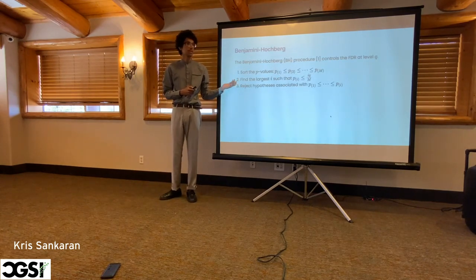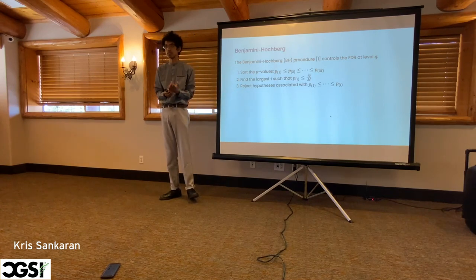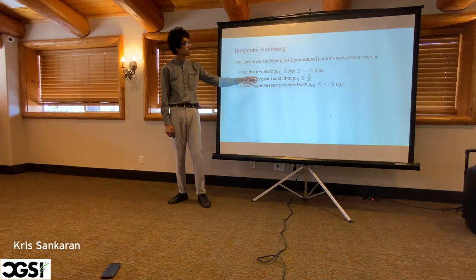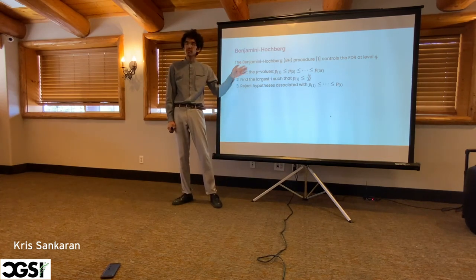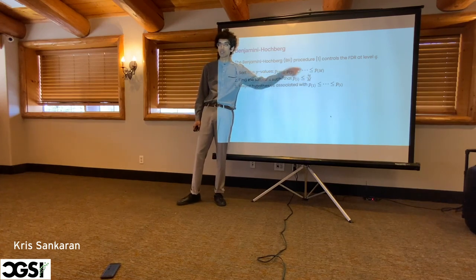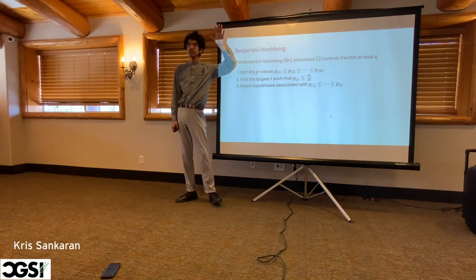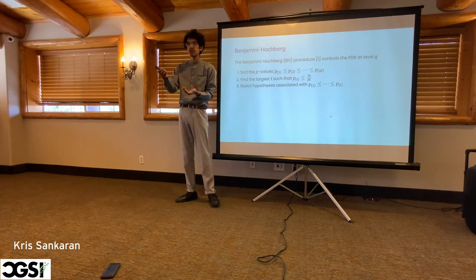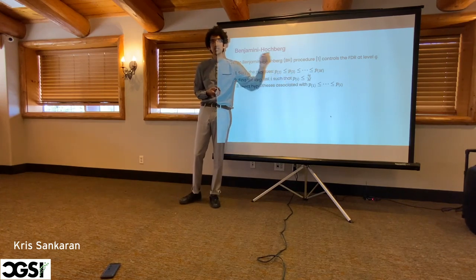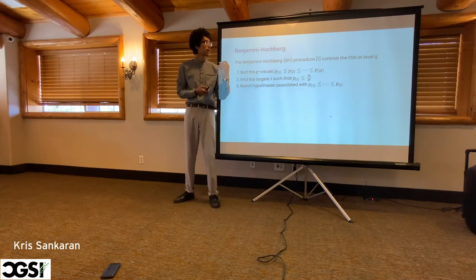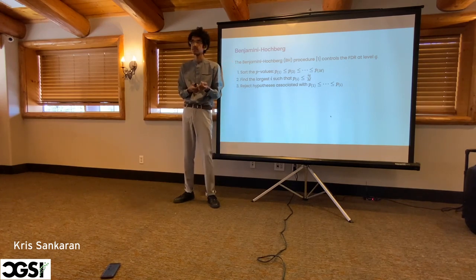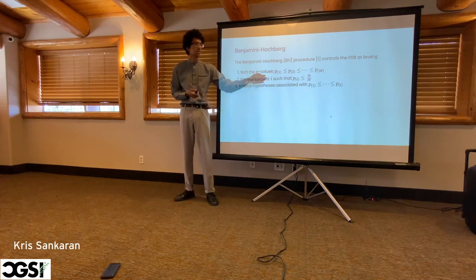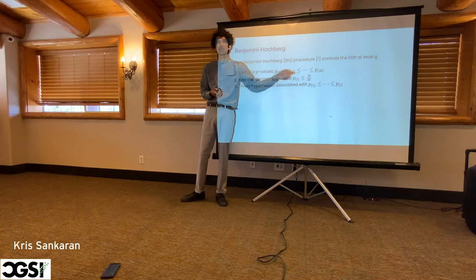One very useful recipe that will control the false discovery rate is called the Benjamini-Hochberg procedure. You sort your m p-values from 1 through m. Starting from the first, you compare it to a sequence of thresholds — the first is the most stringent: q divided by m, where q might be 0.1 for 10% false discoveries. Then unlike Bonferroni, the next threshold is a little more relaxed, and you continue relaxing the sequence of thresholds. If you follow this procedure and reject up to the final one still below its threshold, that controls the false discovery rate.